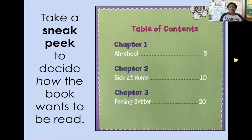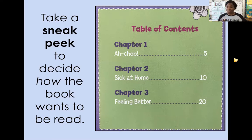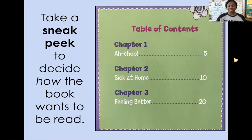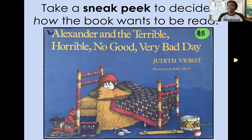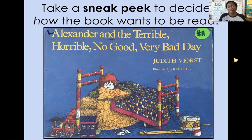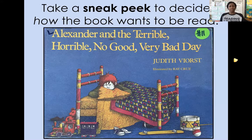So readers, as you're reading today, we are continuing to take charge of our reading. Yesterday we learned that we decide how to read a story, and today we're diving a little bit deeper — we're going to use a sneak peek to help us decide how that book wants to be read. So now it's your turn. This next book is called 'Alexander and the Terrible, Horrible, No Good, Very Bad Day.' So just from the cover and the title, go ahead and ask yourself: hmm, how does this book want to be read? Tell a partner how you think this book wants to be read, just from the front cover.